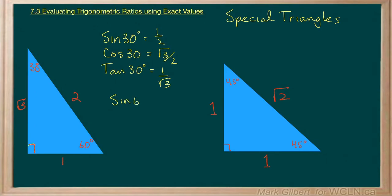Let's do the sine of 60, cosine of 60, and tangent of 60. Sine of 60 is the opposite, root 3 over the hypotenuse, 2. Cosine of 60 is the adjacent over the hypotenuse, 1 over 2, 1 half. And the tangent of 60 is the opposite, root 3 over the adjacent, which is just root 3.